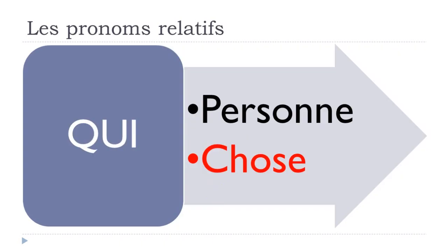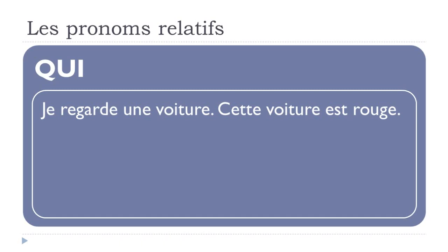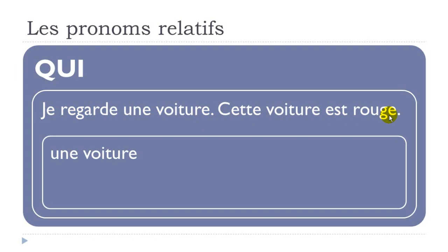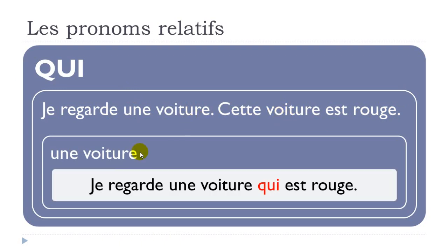Let's see now if we replace une chose — a thing — with qui. Je regarde une voiture, cette voiture est rouge. We would like to avoid the repetition of une voiture. So: je regarde une voiture qui est rouge. Exactly the same thing — you put qui and then the verb after that, est rouge.